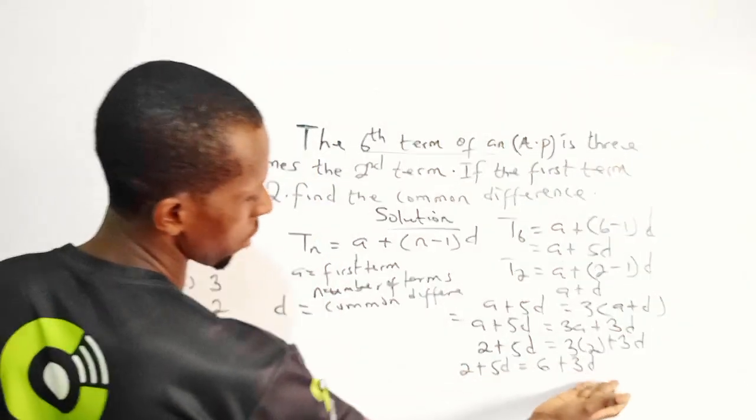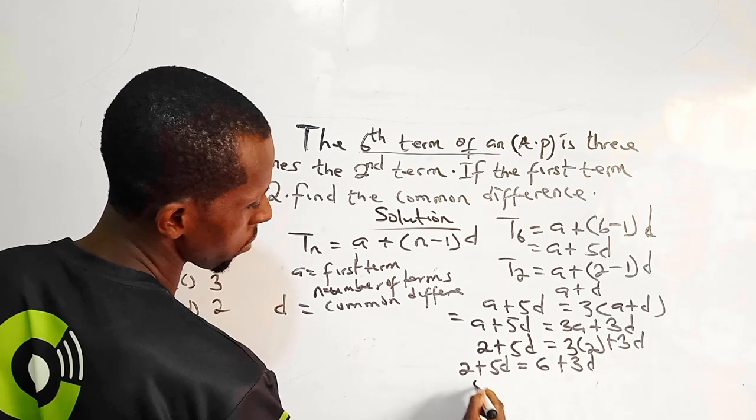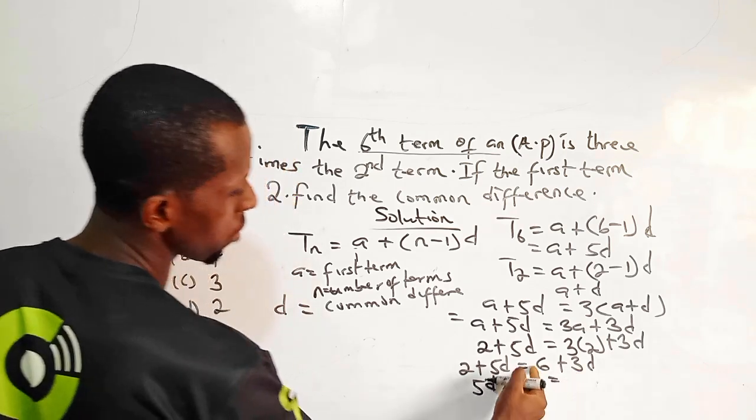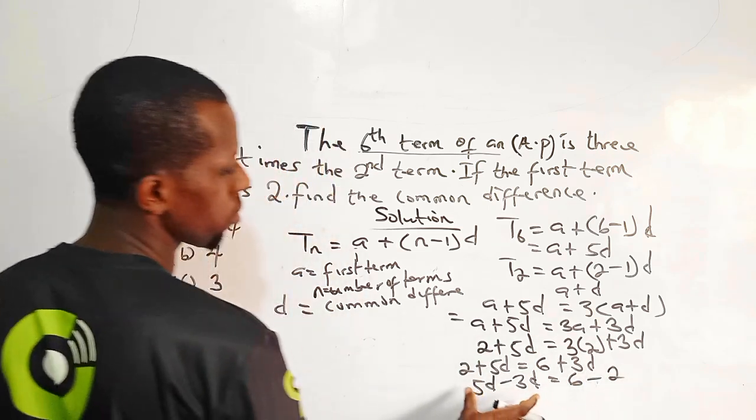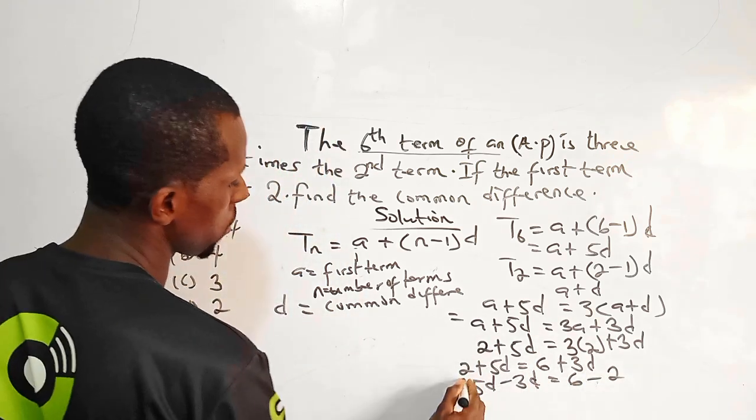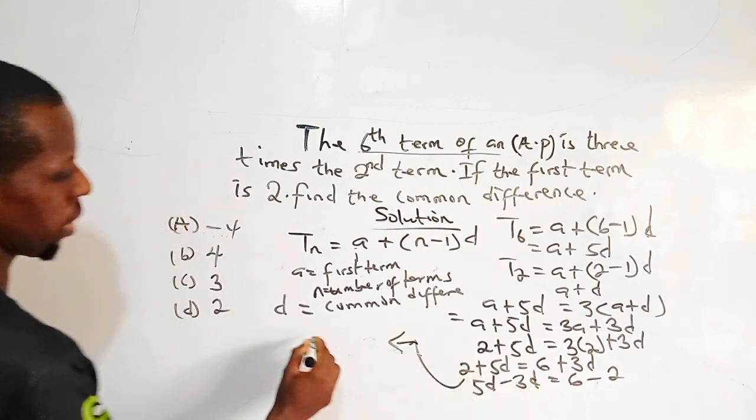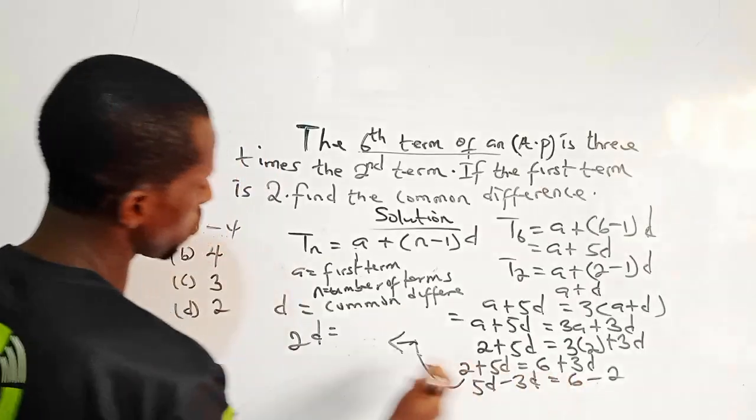So I can collect the like terms. I can say 5d, I bring my 3d, that is minus 3d. So I have 5d minus 3d, I have it as 2d equals 6 minus 2, that is 4.